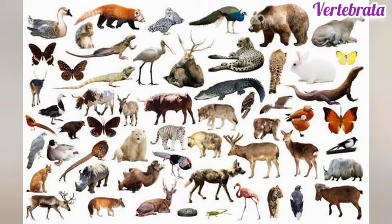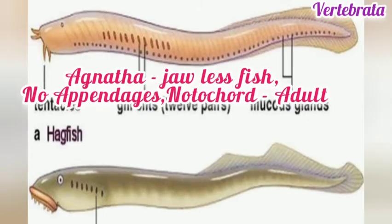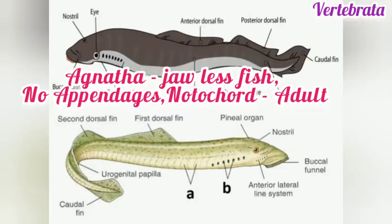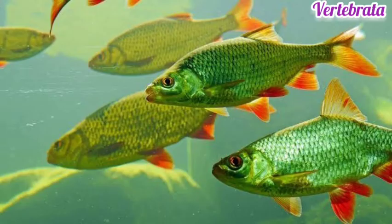Subphylum Vertebrata is divided into two major divisions: Agnatha and Gnathostomata. Agnatha contains jawless fish-like animals — they are aquatic vertebrates that live in water and do not contain paired appendages. The notochord persists in adult animals.